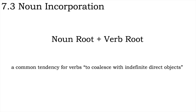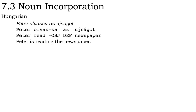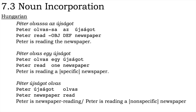Mithun notes a common tendency in many languages for verbs to coalesce with indefinite direct objects, and provides several Hungarian examples in which the referentiality and definiteness of the object affect the form of the predicate: Péter olvassa az újságot. Péter olvas egy újságot. Péter újságot olvas. It's quite easy to see that we're well on the way here to true noun incorporation.